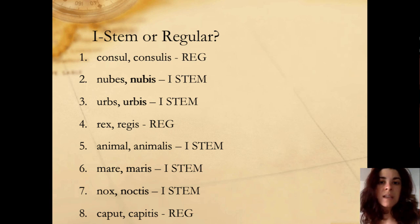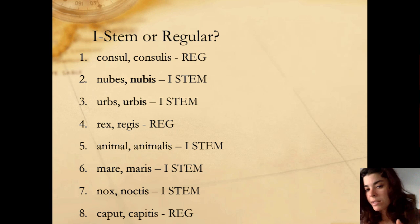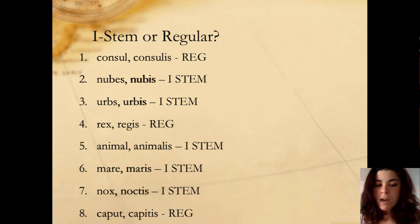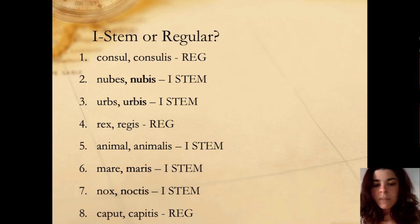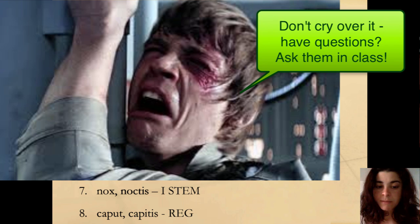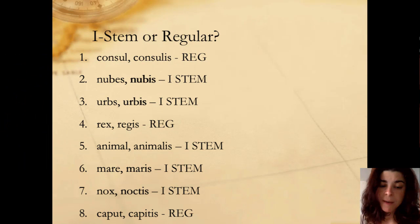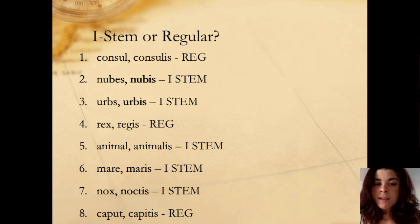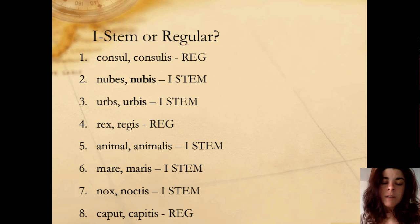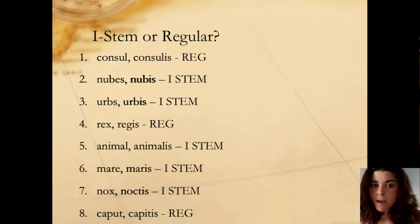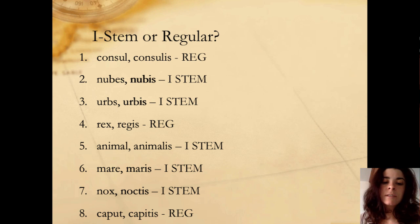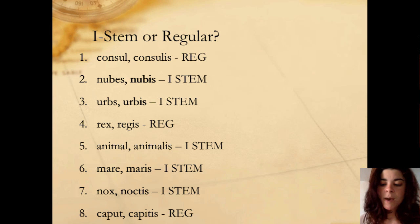Mare ends in E, and it was also your example from the previous slide — i-stem. Nox: one syllable, ends in X — i-stem. Caput, capitis doesn't end in X or S — well, it's not one syllable, so you can rule out that pattern. It's not ending in AL, AR, or E, so it doesn't follow that pattern. And it doesn't look almost exactly like its genitive. So it doesn't follow any pattern — regular.